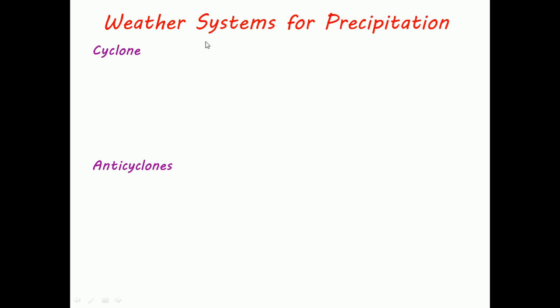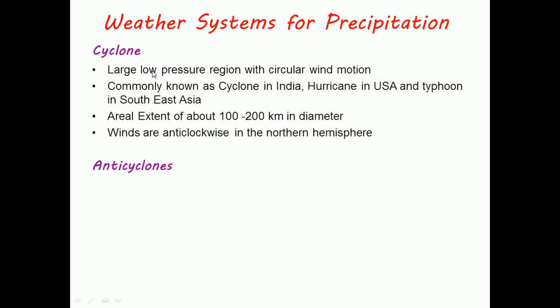The next weather system for precipitation is cyclone. Cyclone is a large low pressure region with circular wind motion, commonly known as cyclone in India, hurricane in USA, and typhoon in Southeast Asia. Its aerial extent is about 100 to 200 km in diameter, and winds are anti-clockwise in northern hemisphere.